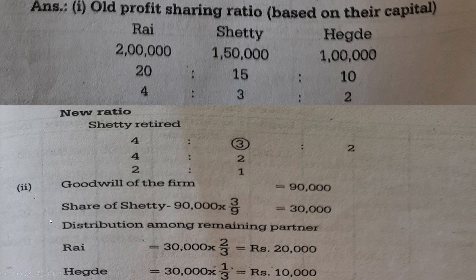The goodwill of the firm is Rs. 90,000. Shetty's share of goodwill: 90,000 × 3/9 (old ratio) = Rs. 30,000. This is distributed among the remaining partners — Rai gets 30,000 × 2/3 = Rs. 20,000, and Egde gets 30,000 × 1/3 = Rs. 10,000.